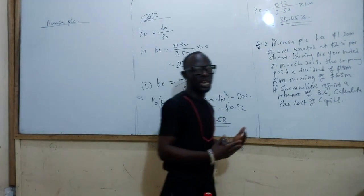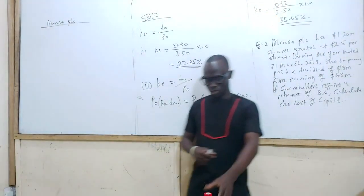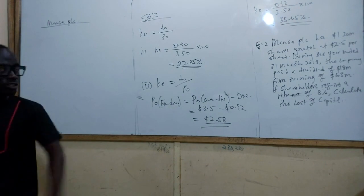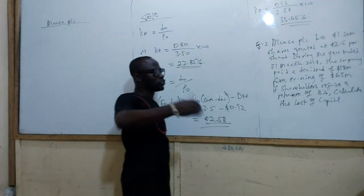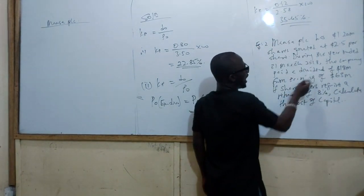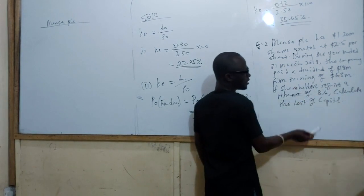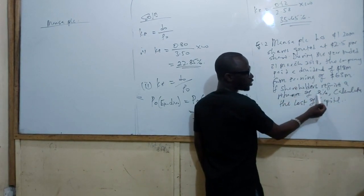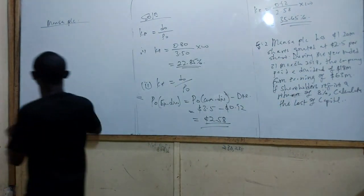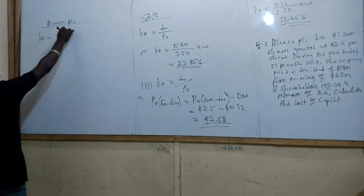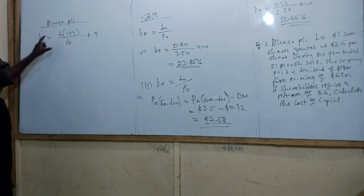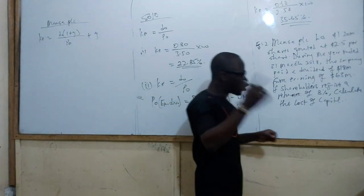The question tells us which formula to use. Any time you see a company paying a dividend from earnings and a shareholders' required rate of return, Gordon's approximation should come to mind. For that reason, we are going to use the growth formula because of this information.